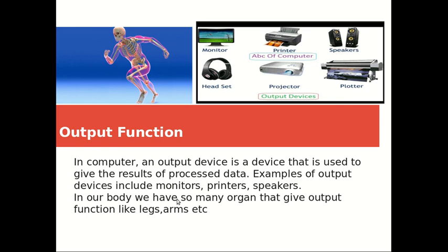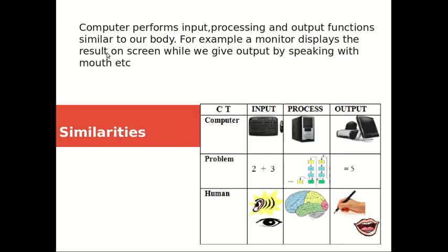In our body, we have many organs that give output functions, like our legs and arms. If we think that we have to raise something, our brain processes it and sends instructions to move our hands and grab it. So we have many organs that provide output functions, just like a computer. Computer performs input, processing, and output functions similar to our body.